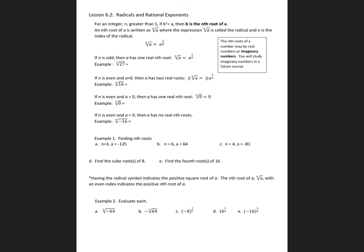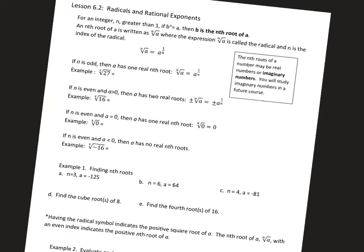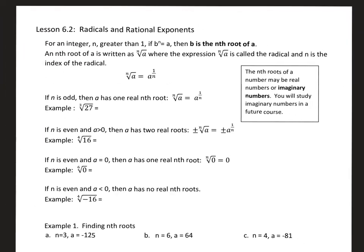So far we've done exponents that are whole numbers or integers. Now we're going to talk about rational exponents. Normally we've done what's called the square root. The square root means that it's the second root. The square root of 25 is 5, because 5 times 5 is 25 — we're taking them out in groups of 2.